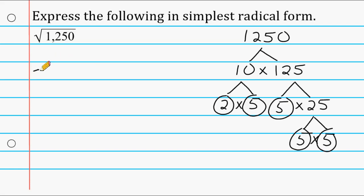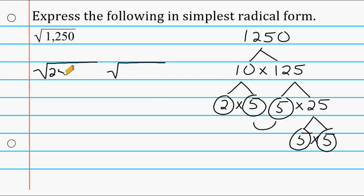We go off to the side and make our two radical symbols. Underneath the first one we write the perfect squares, so we have to find pairs of prime numbers. Right here we have a pair of 5's, so we take 5 times 5, which is 25, and write that underneath our first radical symbol. And we have another pair of 5's here, so 5 times 5 produces the perfect square of 25, and we write that underneath the first radical symbol as well. We have a 2 left over with no other 2 to pair up with, so it won't produce a perfect square and we write it underneath the other radical symbol.